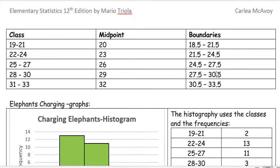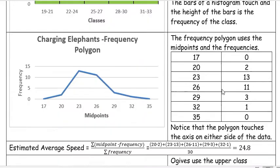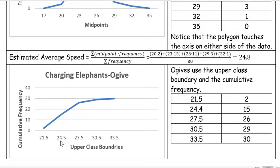Those upper class boundaries are the ones we're going to use for the ogive. When you look at our graph, you can see we have 21.5, 24.5, and so forth. Those are our upper class boundaries.